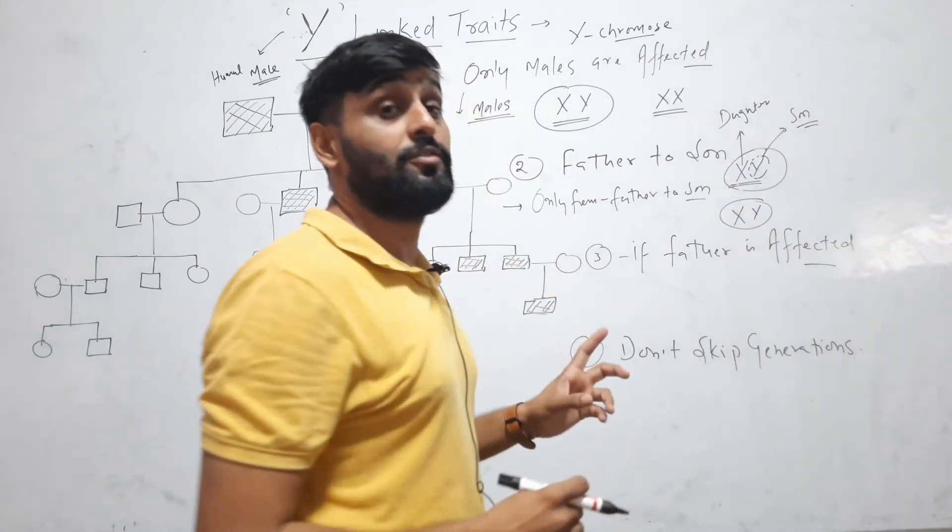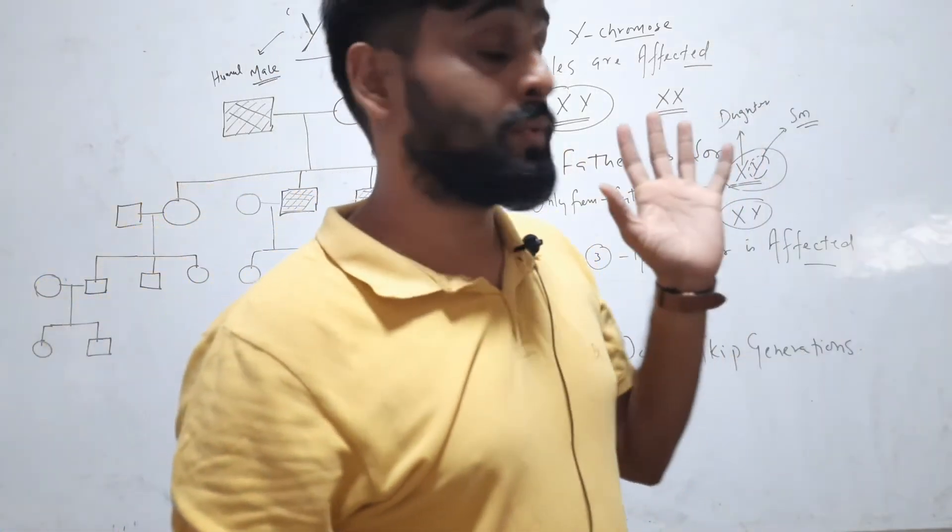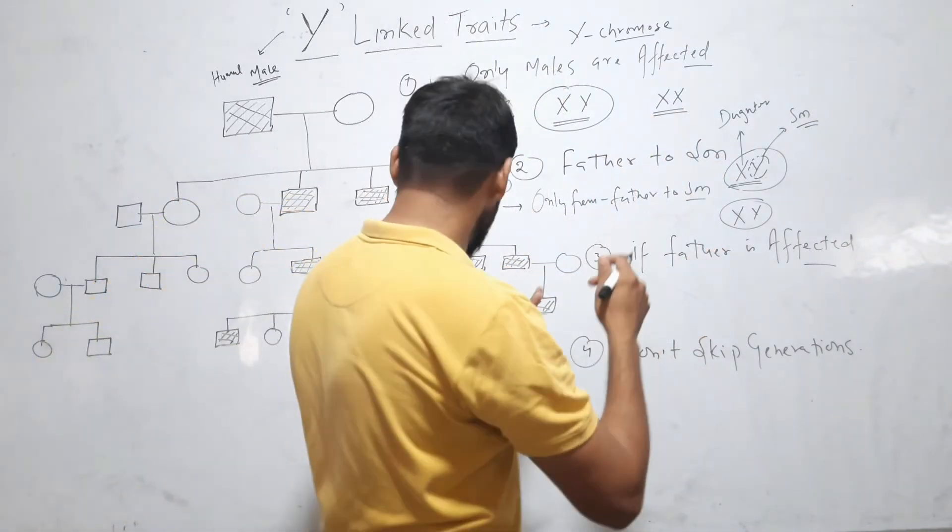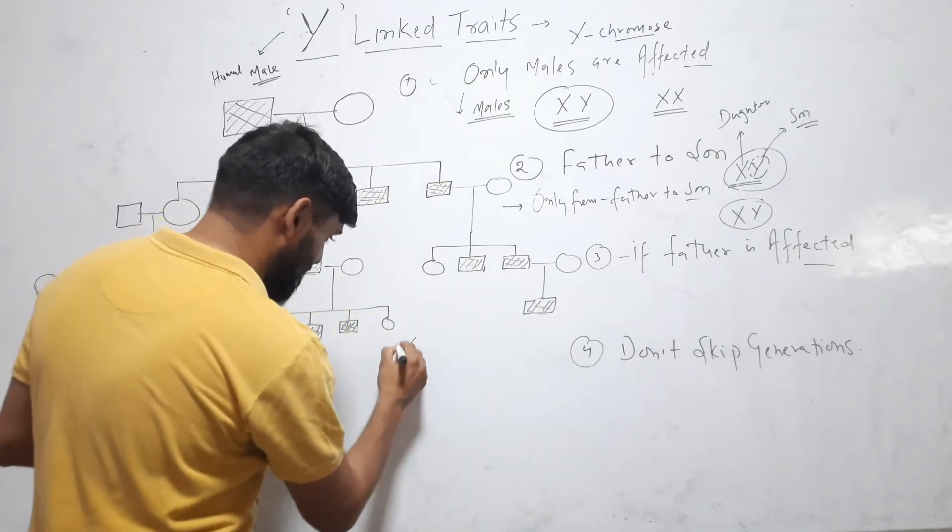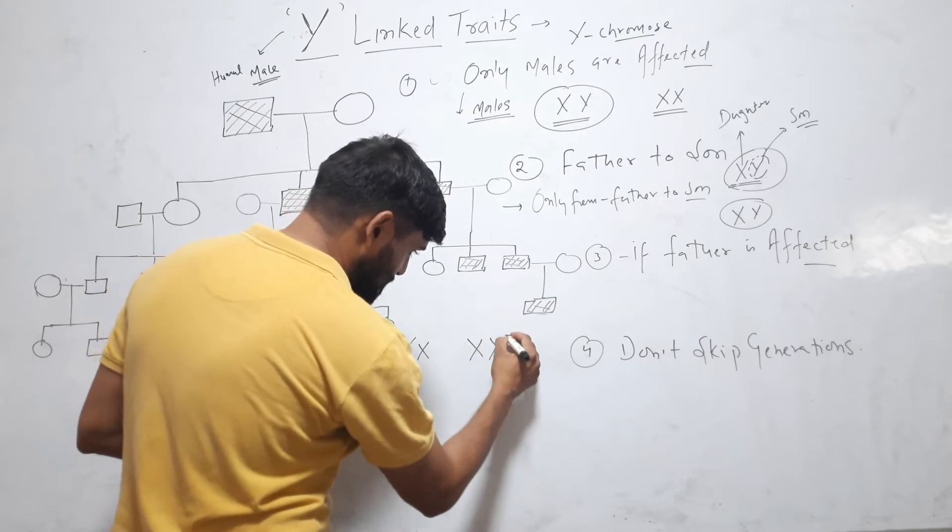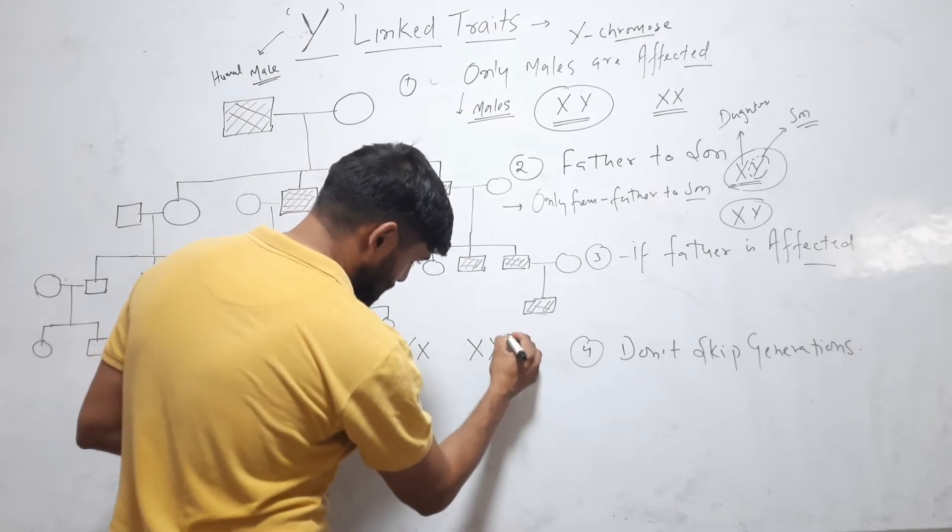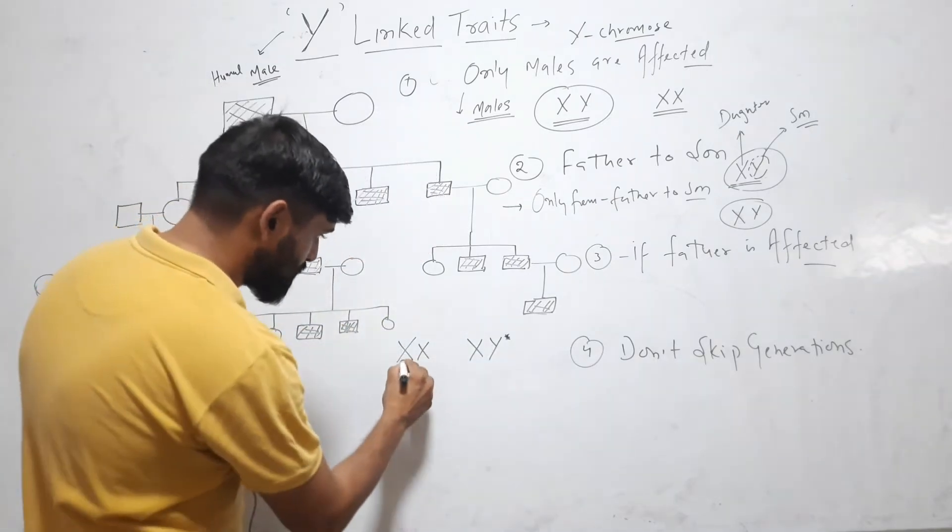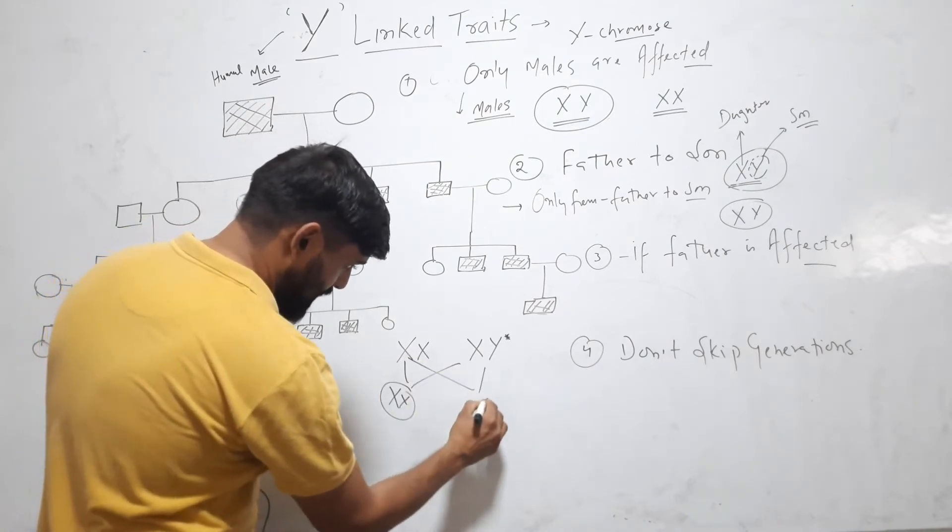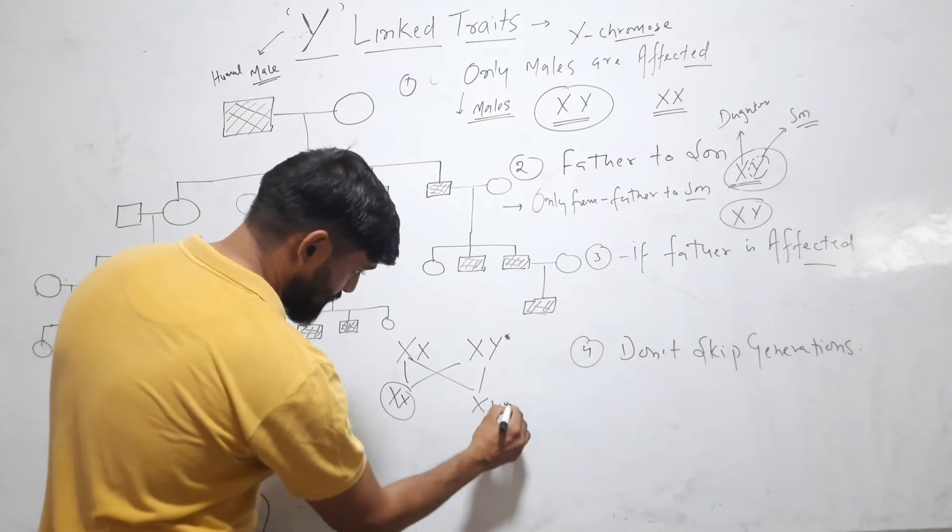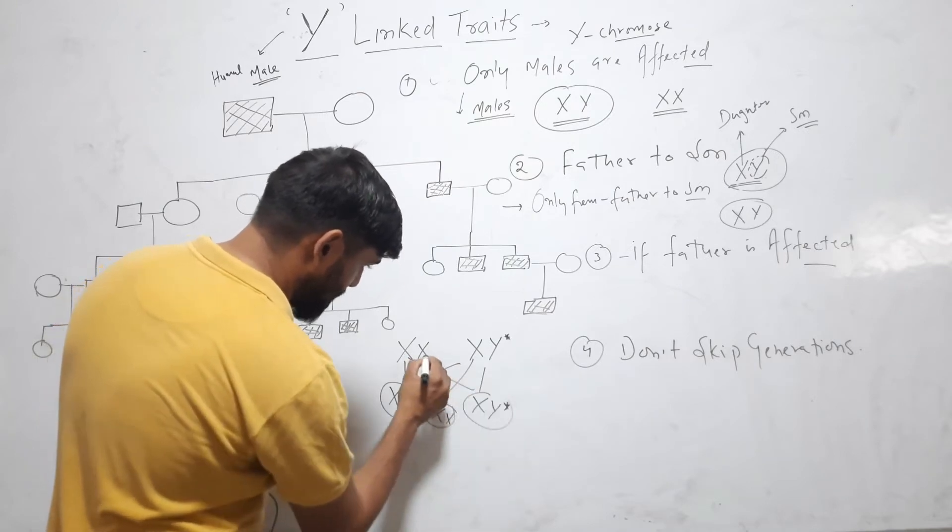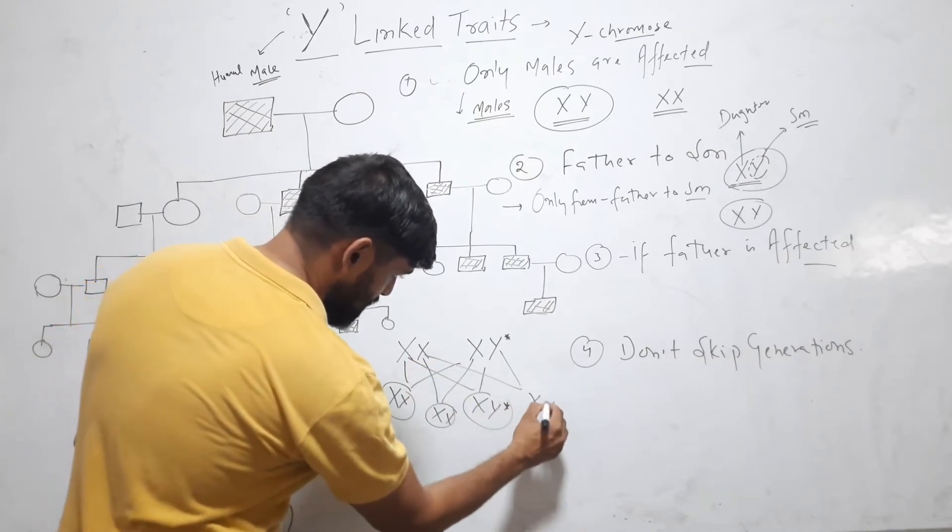It is always transmitted from father to son. If third one is father is affected, suppose here I am taking a cross XX XY and any trait that is present on this Y, I am making it star. So here XX XY star, XX and this XY star.